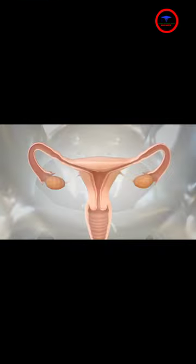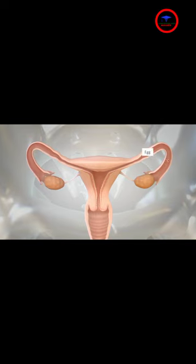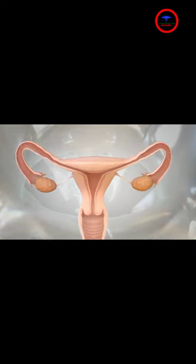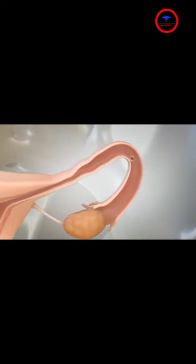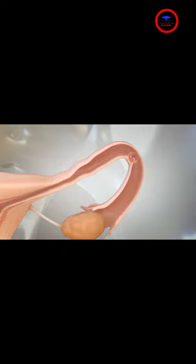An ectopic pregnancy happens when a fertilized egg implants outside of the uterus, in a place where it cannot grow into a healthy baby. This most often happens in a fallopian tube, but in rare cases, it can happen on an ovary or your intestine.